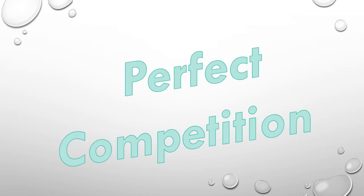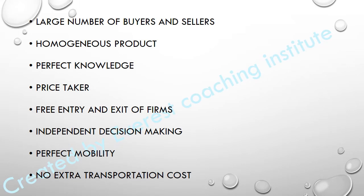In perfect competition, there is a large number of buyers and a large number of sellers. There are very many sellers, and it is not like there is only one seller. Every commodity in the market will have many firms selling it. A large number of quantity units will be sold, and buyers are free to buy any number of commodities from any firm they choose.